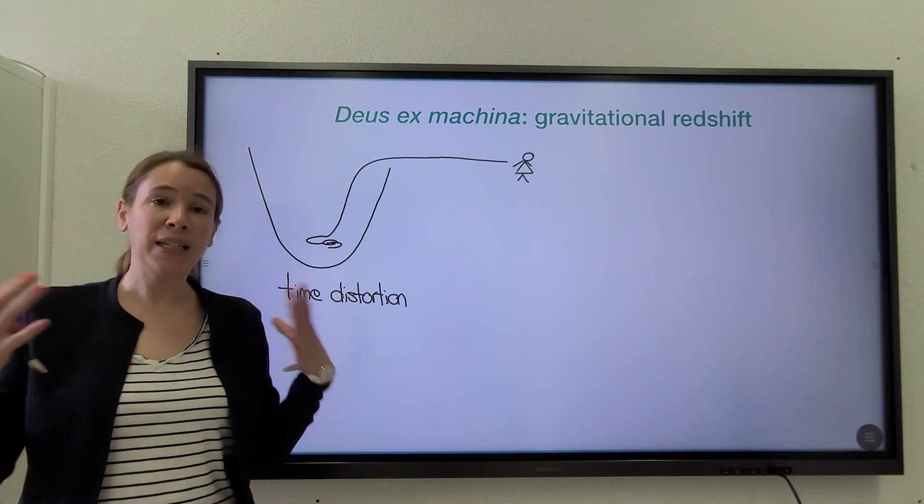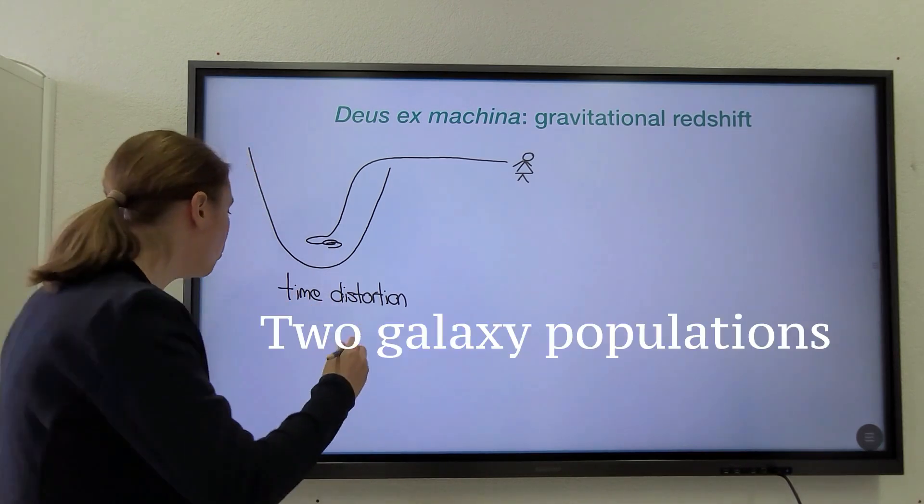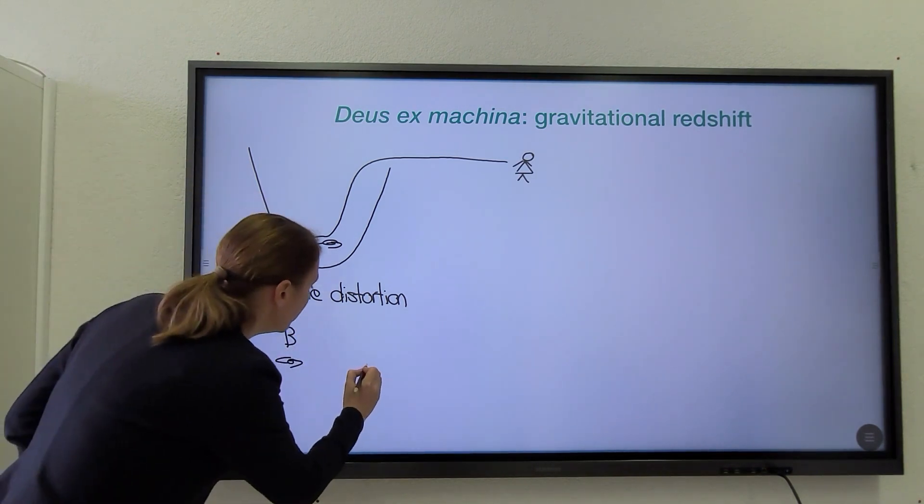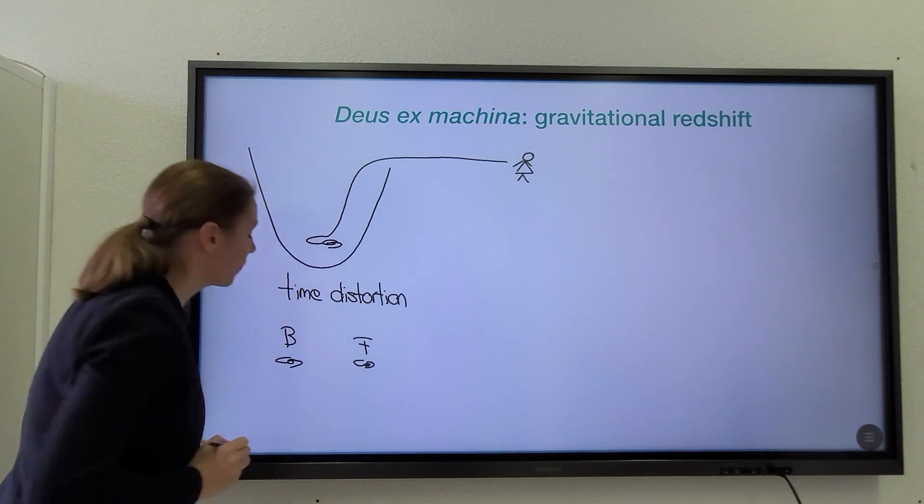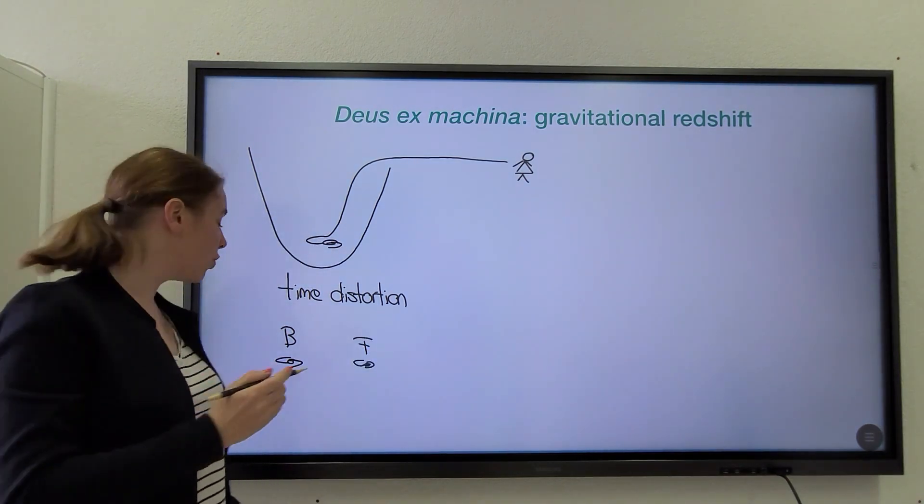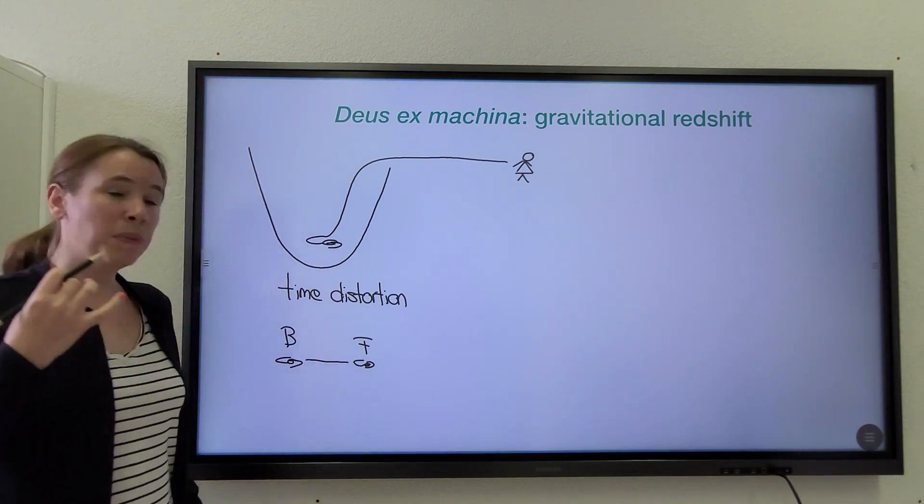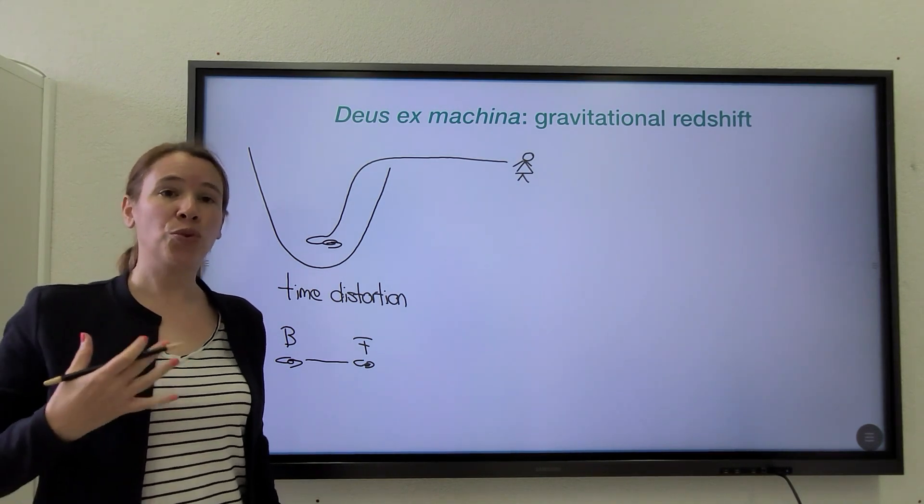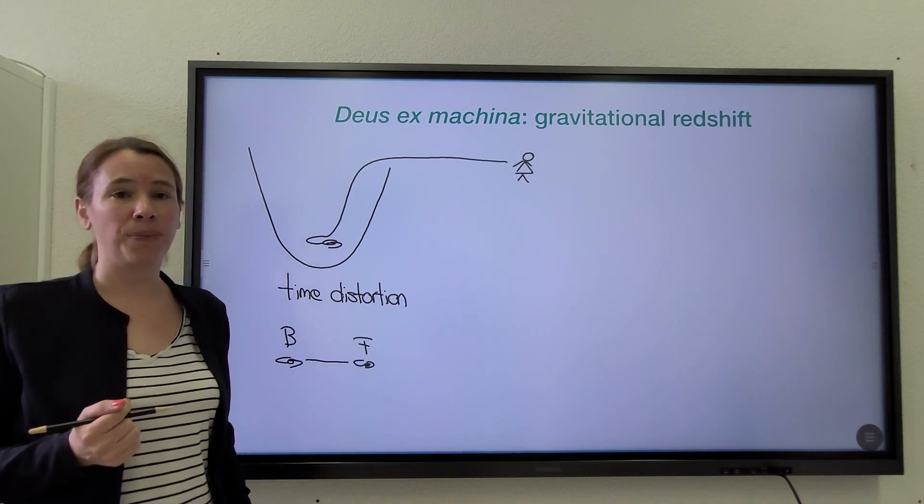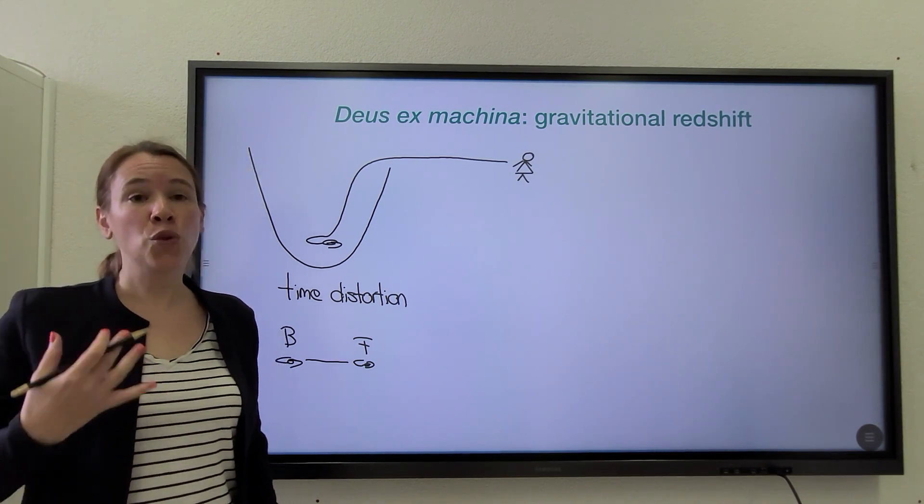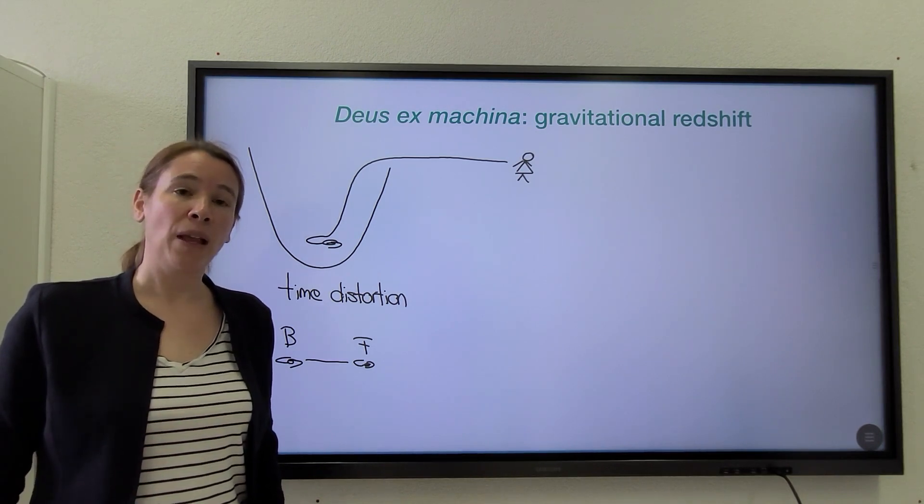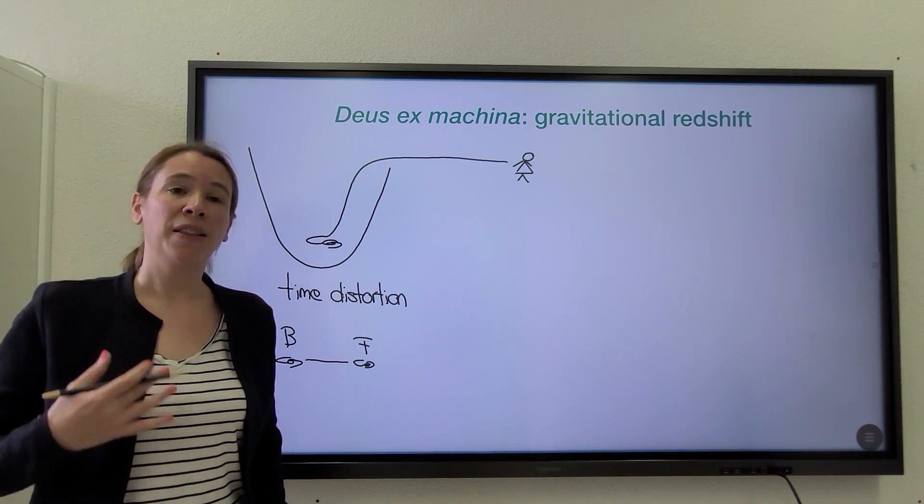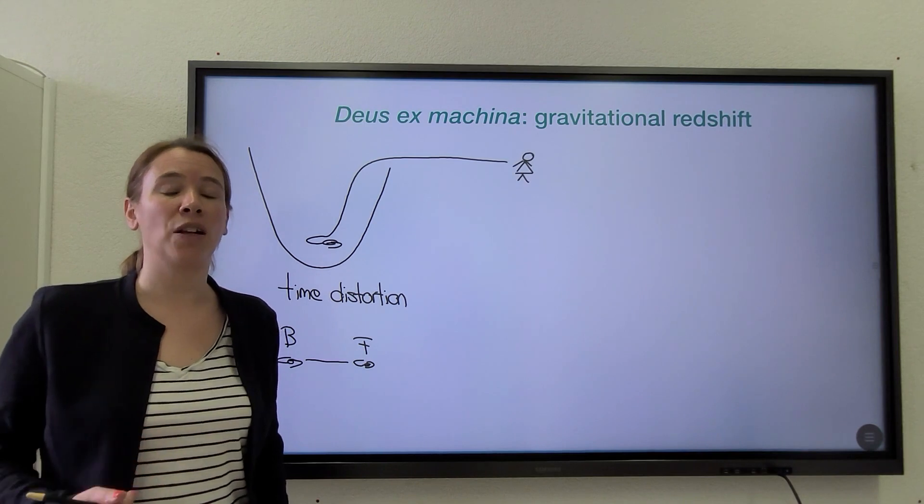And we can do that by splitting our population of galaxies into two populations: a bright population and a faint population. And then we can look at the cross-correlation between these two populations of galaxies. And in particular, if we look for a dipole in this cross-correlation, we will be able to isolate the contribution from the gravitational redshift. So we have checked and this dipole is actually too tiny to be observable with current surveys. But the good news is that with the coming generation of surveys like DESY and the Square Kilometer Array, this dipole will be detectable with a high signal-to-noise.